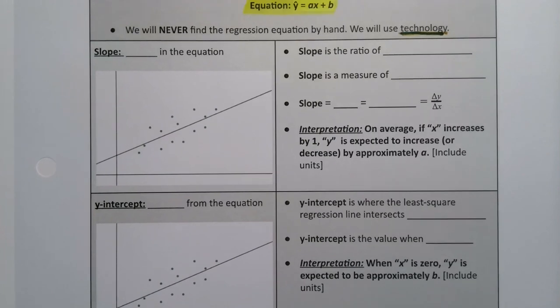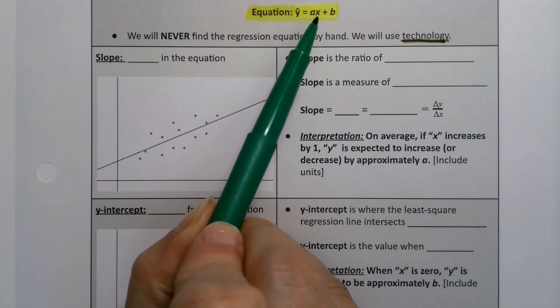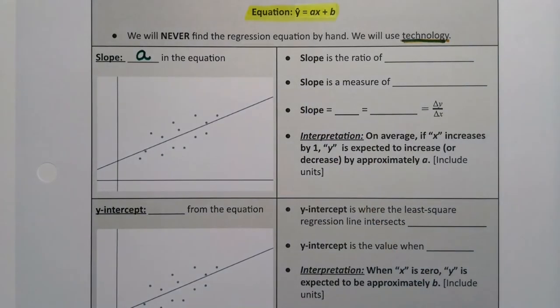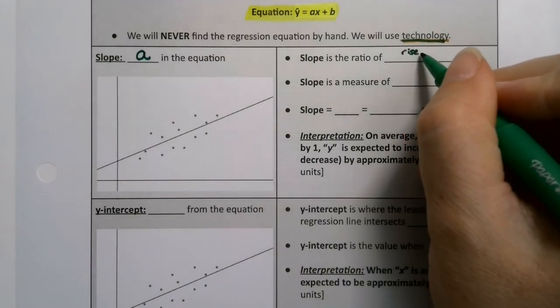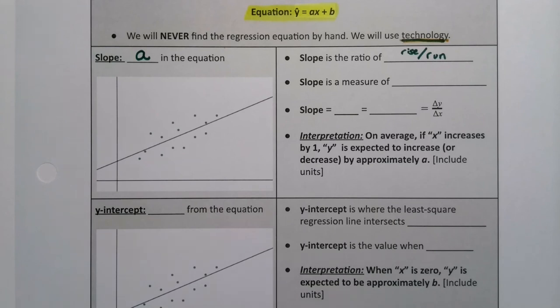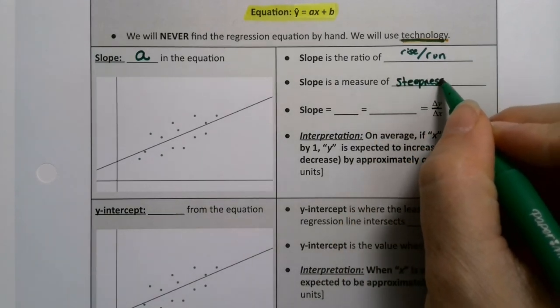So the slope. Let's begin with slope. When you look in the equation, the slope is the thing that's multiplied by the x. So it's the number in front of that, which is a. So a is the slope, not ax, just a. It's just the coefficient, the number. Now slope is the ratio of rise divided by run.